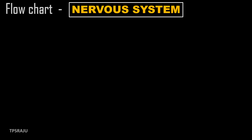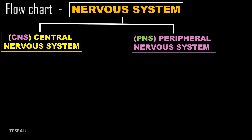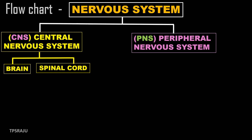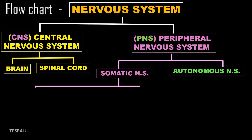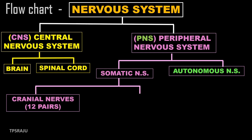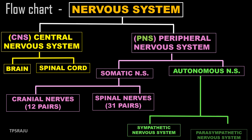Now, we are going to draw a flowchart that shows the nervous system. The human nervous system is studied under two divisions: Central nervous system and peripheral nervous system. The central nervous system consists of the brain and spinal cord, while the peripheral nervous system is further divided into somatic nervous system and autonomous nervous system. Somatic nervous system consists of 12 pairs of cranial nerves and 31 pairs of spinal nerves. Autonomous nervous system has two parts: sympathetic and parasympathetic.